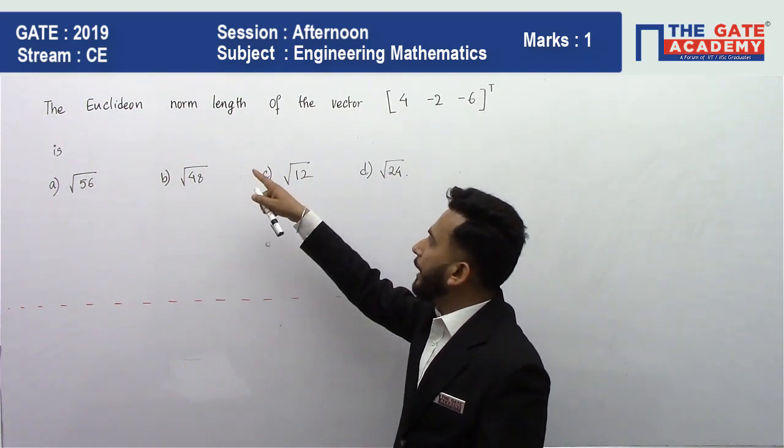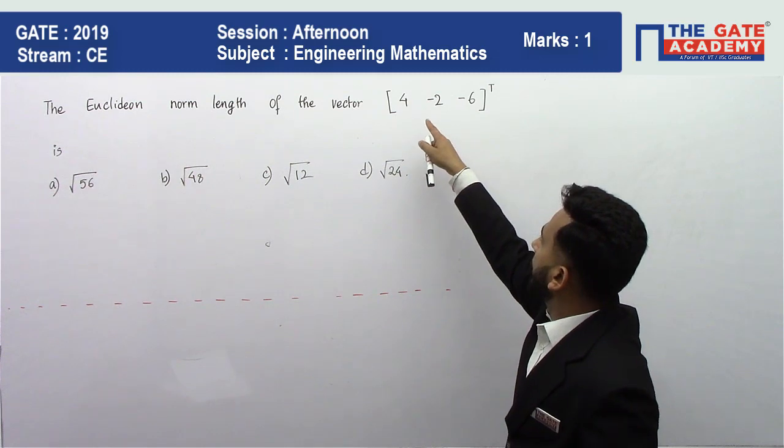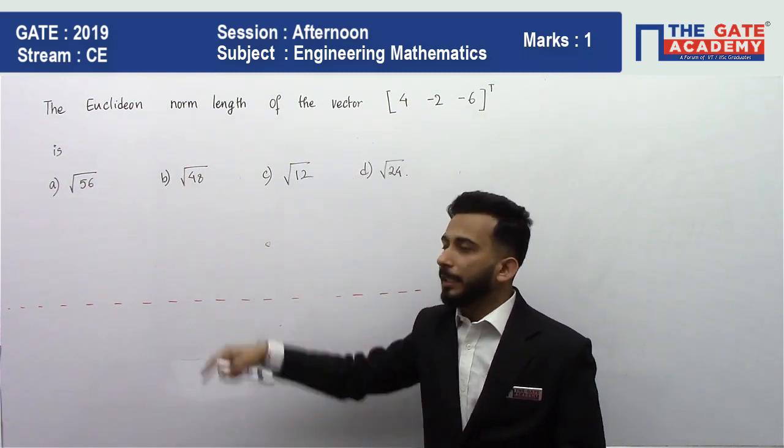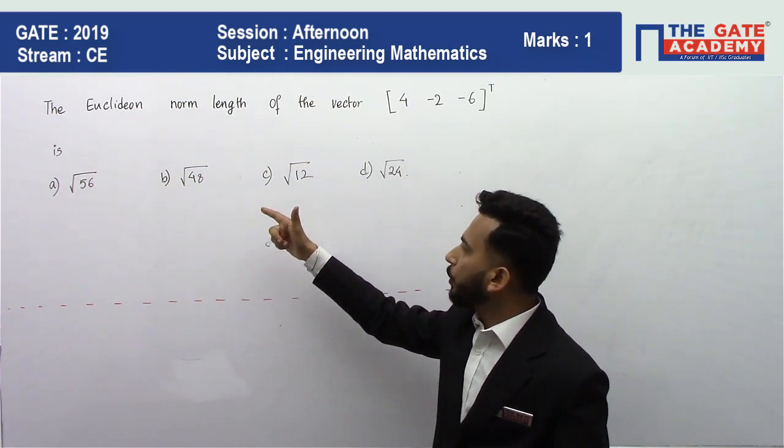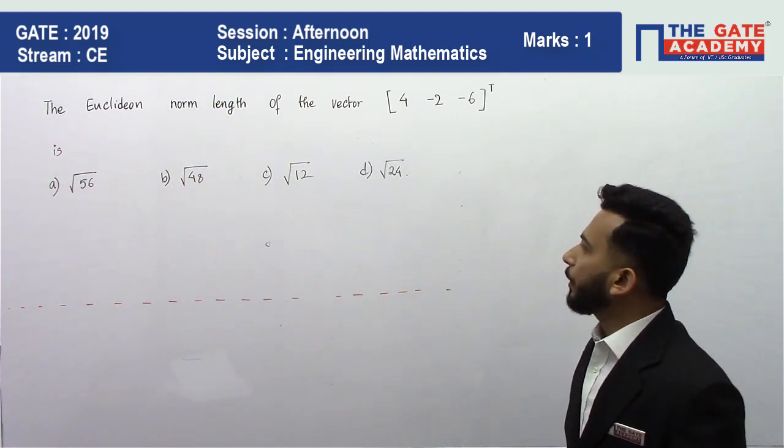The question is: the Euclidean norm length of the vector [4, -2, -6]^T is option a) √56, option b) √48, option c) √12, and option d) √24.